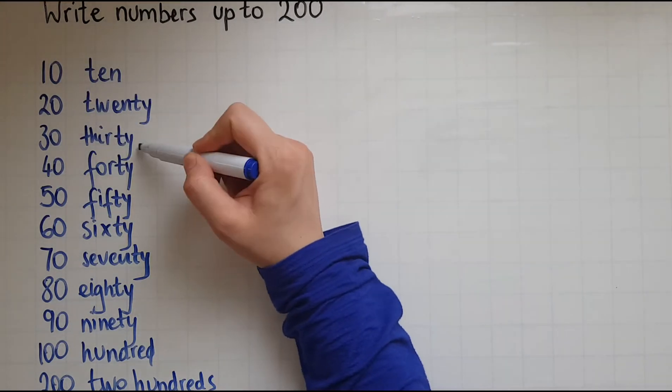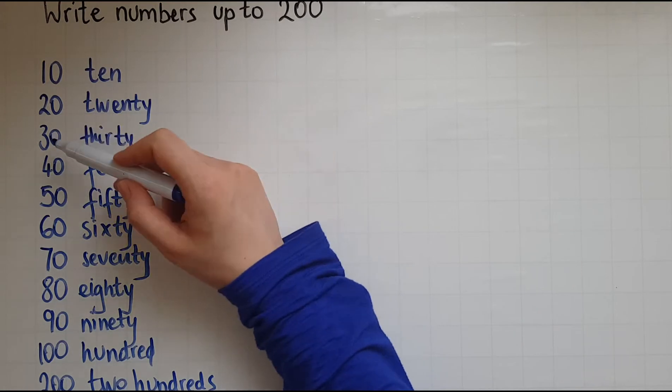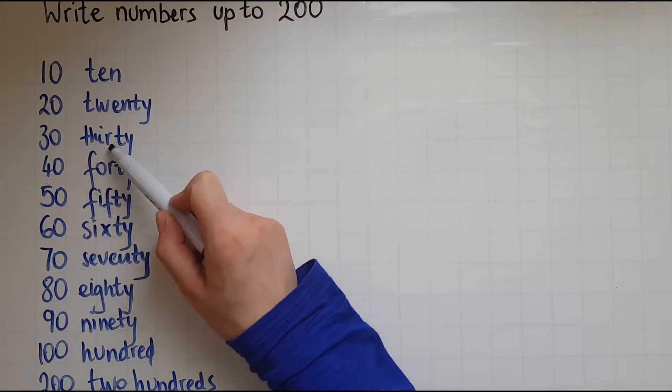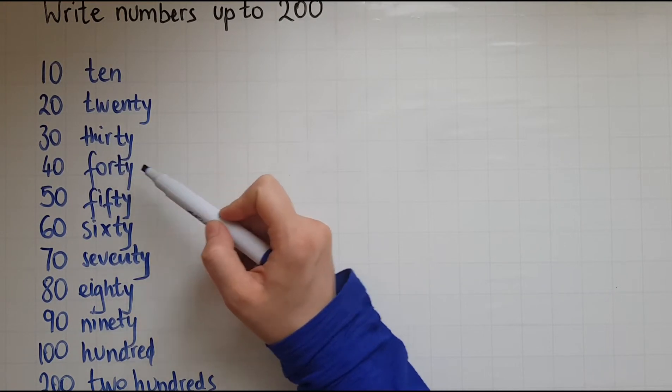So 10, you should know 20. 30, 30 comes from the 3, but you write it as t-h-i-r and then the t at the end.